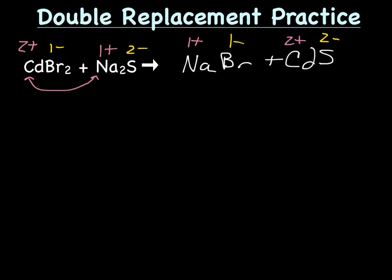So, NaBr, 1 plus, 1 minus, neutral. Cadmium, 2 plus, sulfur, 2 minus, neutral. So, we can get rid of all this extra stuff now.